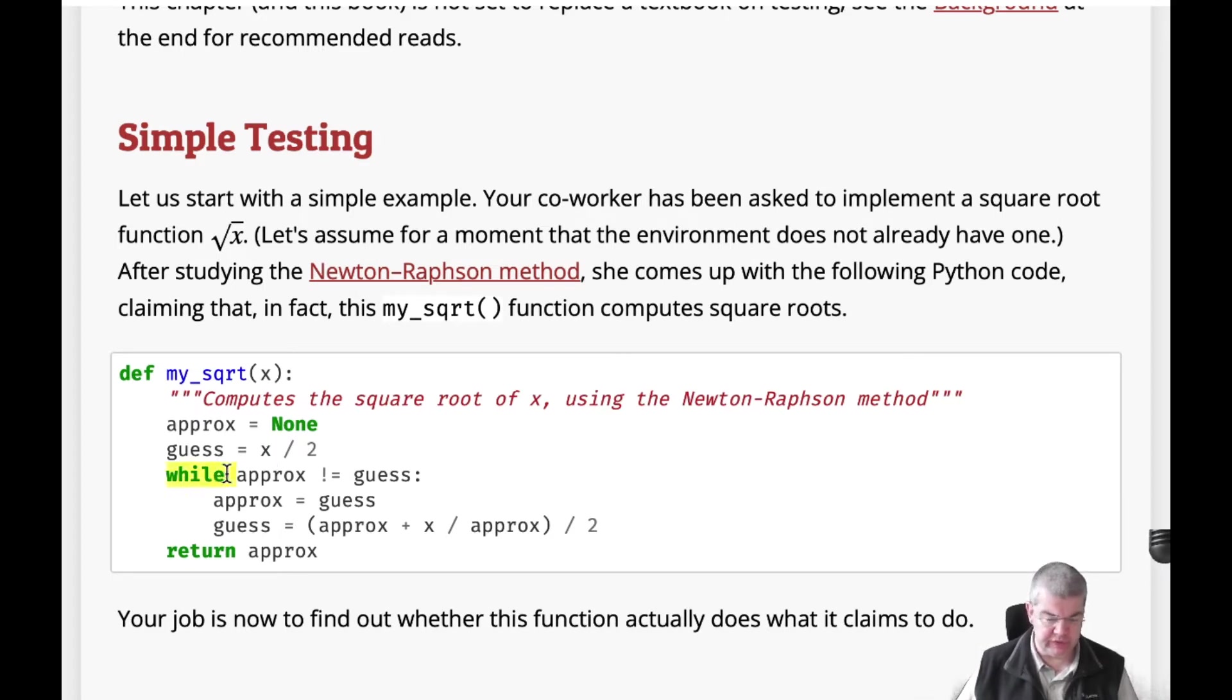Now we have a loop and you can again see that the loop body is indented in here. And this loop goes along while the approximation has not yet met the guess level. So what we do here is we do have a new approximation which is the guess. And we create a new guess which comes from this formula over here. And we repeat the whole thing until the approximation and the guess are equal. And then we return the whole thing.